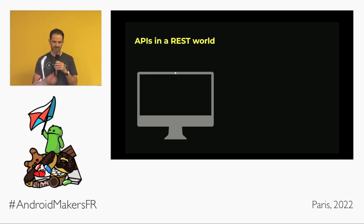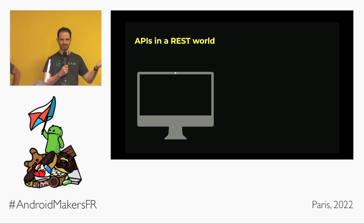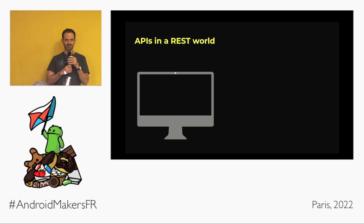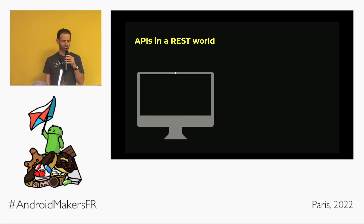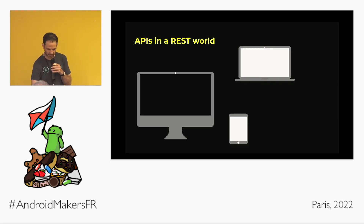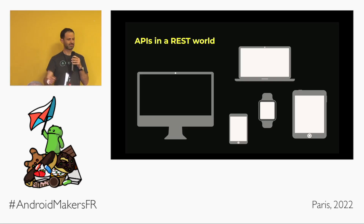Maybe the easiest way to think about it is to compare it to a regular REST API. With REST you have an endpoint, you do an HTTP GET, you get a JSON back. If you're a company like Facebook in 2012, you do this for your desktop website, your laptop, mobile phone, tablet, maybe a smartwatch — so every time you want a new app you create new endpoints, and this scales really badly.